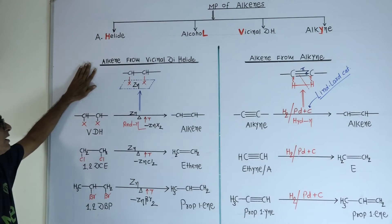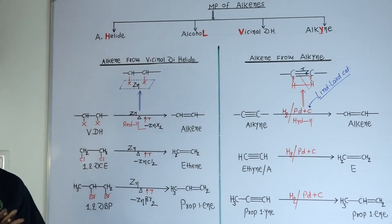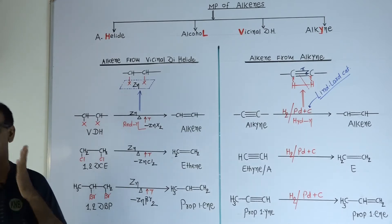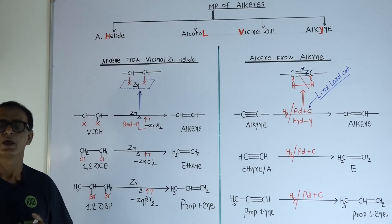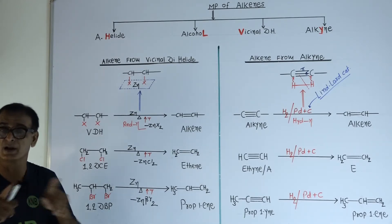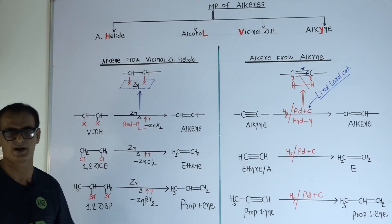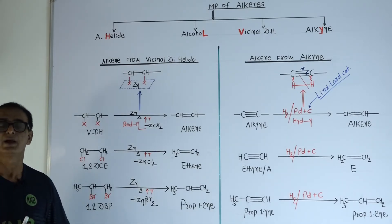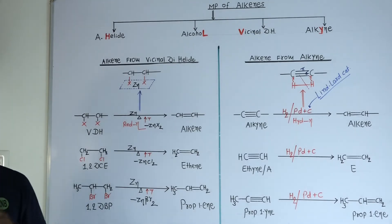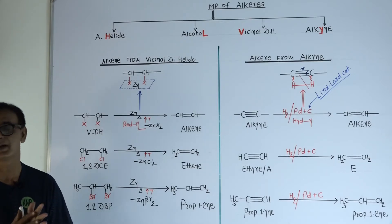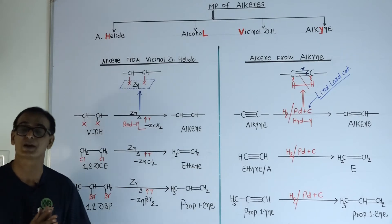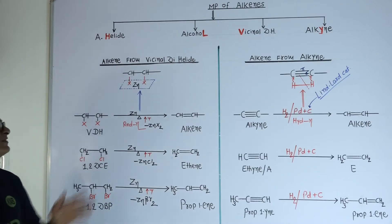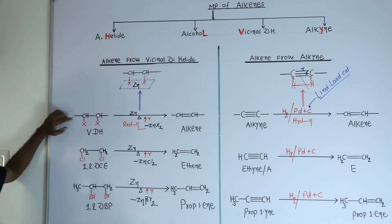First of all, what is a vicinal dihalide? From the name you can judge: dihalide means the organic compound having two halogen atoms. A dihalide compound can be classified into two types: geminal dihalide and vicinal dihalide. It depends upon the position of both halogen atoms. If both halogen atoms are present on the same carbon atom, that type of dihalide is known as a geminal dihalide. When both halogen atoms are present on neighboring carbon atoms, that type is known as vicinal dihalide.